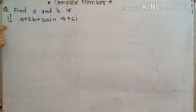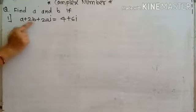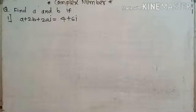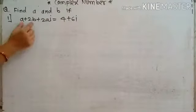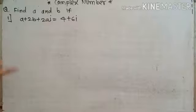We have to find the value of a and b if a plus 2b plus 2ai is equal to 4 plus 6i. We compare real to real and imaginary to imaginary, and then we can find easily the value of a and b.